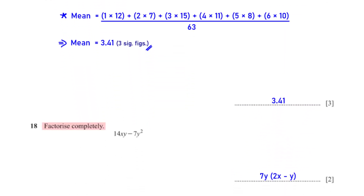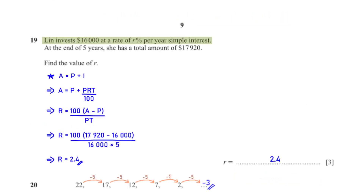Factorise completely 14xy minus 7y². The terms have a common factor of 7y. When we factor out 7y, we are left with 7y(2x − y).